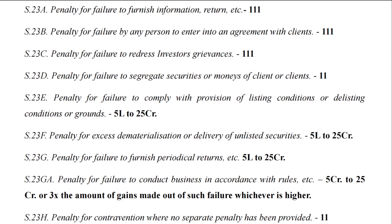Section 23E is the penalty for failure to comply with provisions of listing conditions or delisting conditions or grounds, carrying a penalty of 5 lakh rupees to 25 crore rupees. Section 23F carries the same penalty of 5 lakh to a maximum of 25 crore rupees, for excess dematerialization or delivery of unlisted securities.